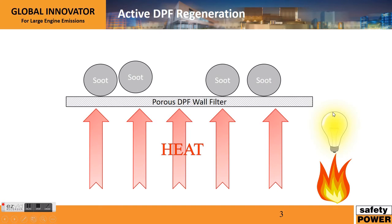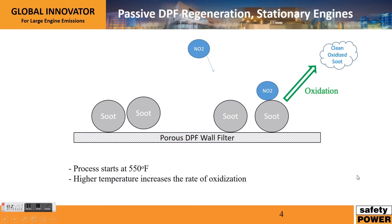The second way is to use electricity. There are some systems out there, but the problem with electricity is you need a lot of it. For a two-megawatt gen set, you need upwards of 50–60 kilowatts of high-voltage power. This makes these systems very expensive because there are very specific approvals required for those types of voltages and they're fairly complex. So while this is definitely one way to achieve regeneration and oxidation of the DPF filter, it comes with significant cost and complexity.